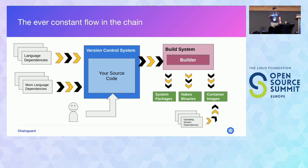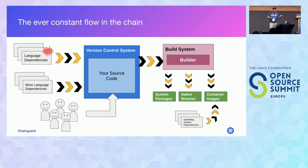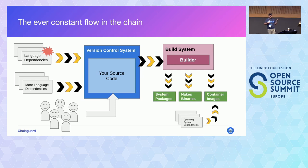This simplified view of the software release cycle helps explore where your project may be open to attack. First, you can pull in a dependency with a vulnerability — either from an attacker injecting malicious code or a well-meaning bug introduced inadvertently upstream. This is your log4j situation, for example. Then, an attacker could breach your version control system. There was a case with the PHP project where an attacker breached the Git server and started pushing malicious commits.